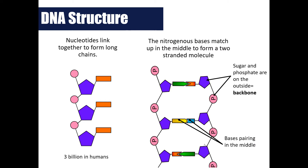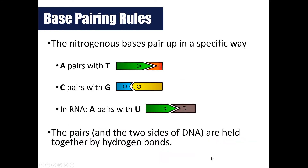Let's go back to the structure of DNA. DNA is made up of nucleotides, and these nucleotides link together to form long chains — three billion of these in human DNA. The nitrogenous bases found in the middle bond together using what we call base pairing rules to form that double helix shape. Let's talk about base pairing rules and why they are important to this unit.